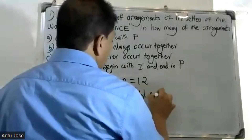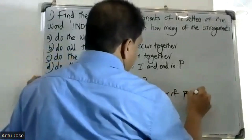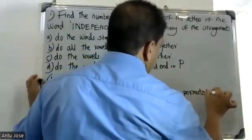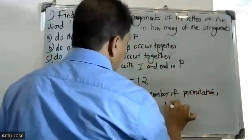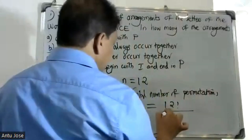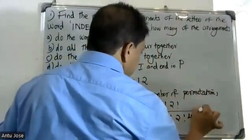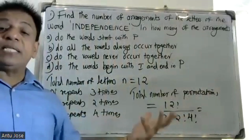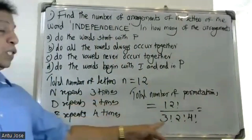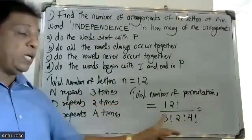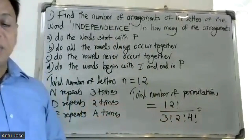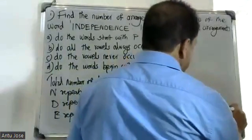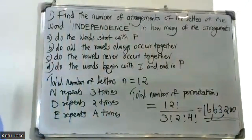The number of permutations or arrangements is equal to 12 factorial divided by 3 factorial times 2 factorial times 2 factorial. Simplifying, the answer is 1,663,200.